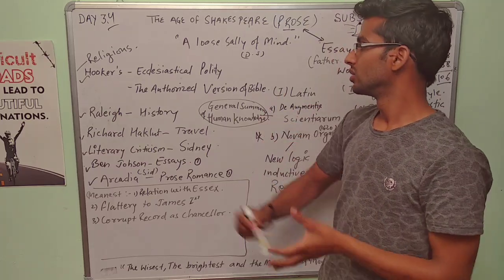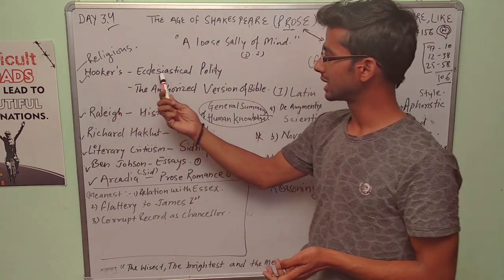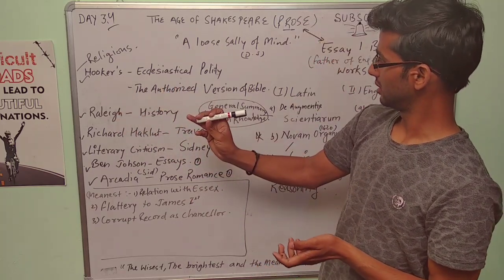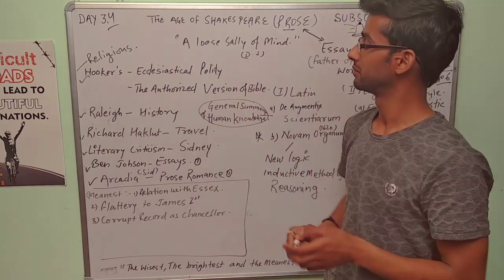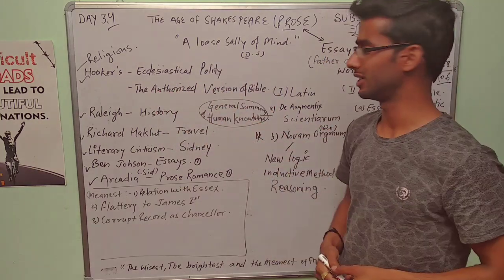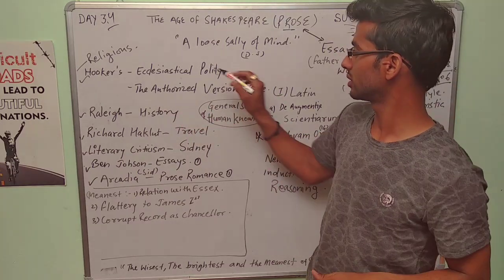Religious works were Hooker's Ecclesiastical Polity—that's sometimes tough pronunciation in English literature—and the Authorized Version of Bible. These two works, and you don't need to go deep in these two works, just know the name of the works.